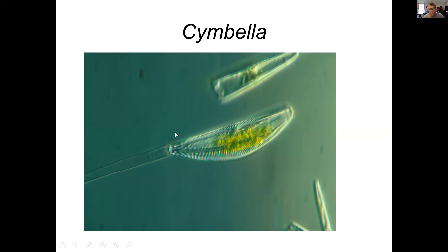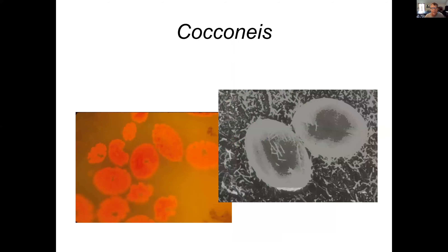Cymbella is a stalked diatom, so it would be attached onto a rock with that stalk you can see coming off the side of it. You can also see that these look a little green, but diatoms get a brownish-reddish look to them because of their carotenoids.